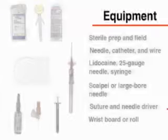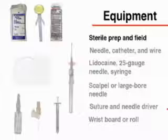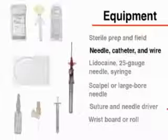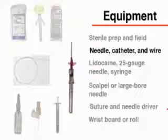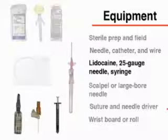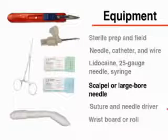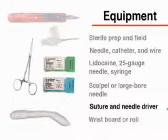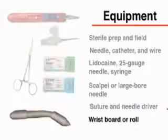For both procedures, similar equipment will be used: material for a sterile prep and a sterile field, a needle, catheter and wire, 1% lidocaine, a 25-gauge needle and 1cc syringe, a larger bore needle or scalpel, suture and needle driver, and a wrist board or roll.